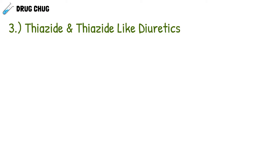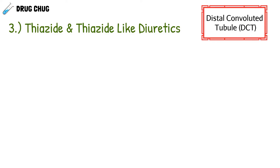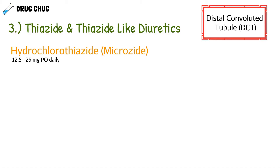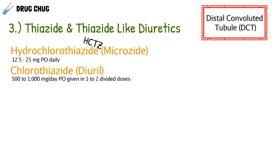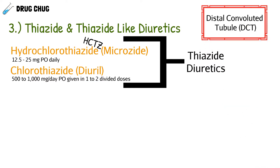Our first class is the thiazide and thiazide-like diuretics. Anytime you hear the word thiazide, think of the distal convoluted tubule (DCT) — that's where these drugs work. The first agent is hydrochlorothiazide, brand name Microzide, commonly abbreviated HCTZ. The next is chlorothiazide, brand name Diuril — a clever name since it causes diuresis. Both of these are true thiazide diuretics.